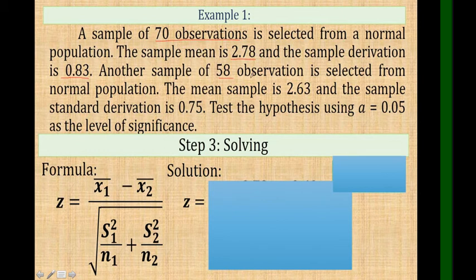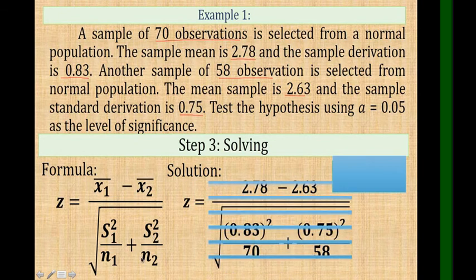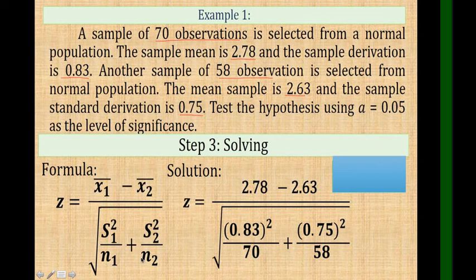For the next one, we have 58 observations with the mean of 2.63 and standard deviation of 0.75. Now put it in the formula. So we have 2.78 minus 2.63 all over the square root of quantity 0.83² over 70 plus quantity 0.75² over 58. You can solve this using a scientific calculator and you will get the answer. But if you're just using a cell phone, you may follow me.